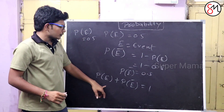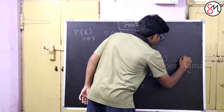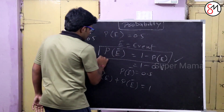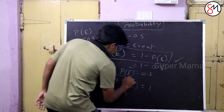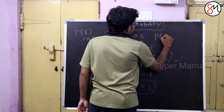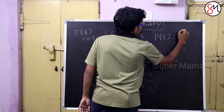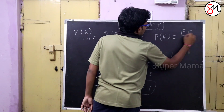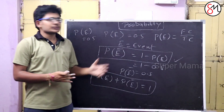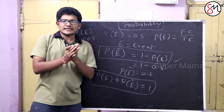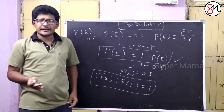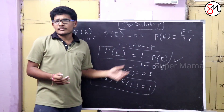So this is one of the important formulas. P is equal to favorable count by total count. This is the formula for probability. In the 10th class and 9th class, this is very useful.